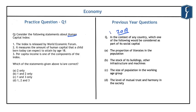This question was asked in the year 2019 and reads: in the context of any country, which one of the following would be considered as a part of its social capital? Social capital simply refers to the intangible relational assets that emerge from social interactions in a society, generated through norms of give and take and reciprocity. A good example of social capital are the self-help groups functioning in different parts of India.